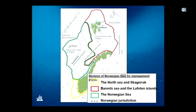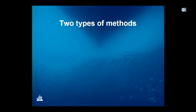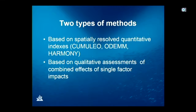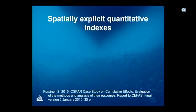I'm going to discuss what methods we should use to assess cumulative impacts for two areas: the Norwegian Sea and the Bering Sea, which are located within the Arctic. I'm going to discuss two types of methods: one based on spatially resolved quantitative indexes, and another based on qualitative assessment of combined effects of single-factor impacts. Those are two very different ways to assess cumulative impacts.